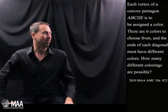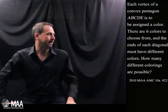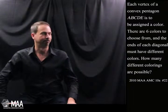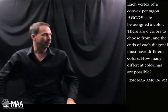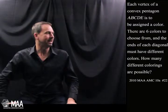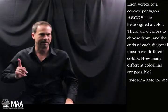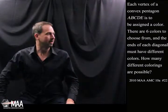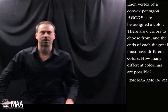Each vertex of a convex pentagon A, B, C, D, E is to be assigned a colour. There are six colours to choose from and the ends of each diagonal must have different colours. The actual question is: how many different colourings are possible?